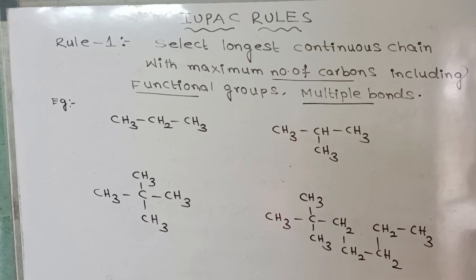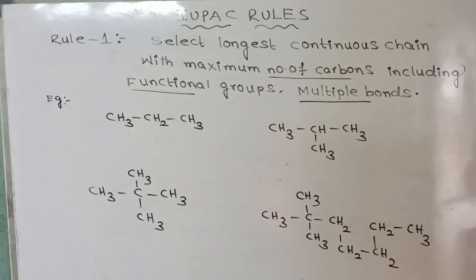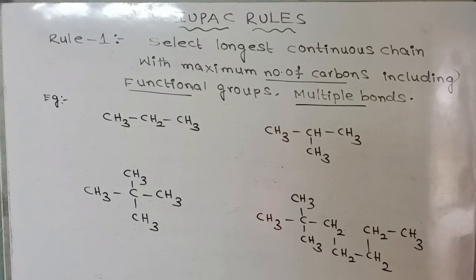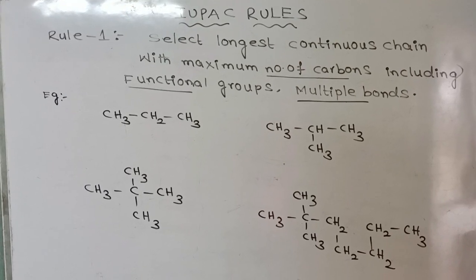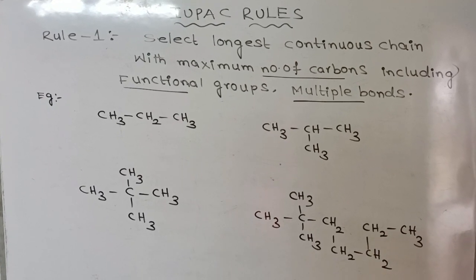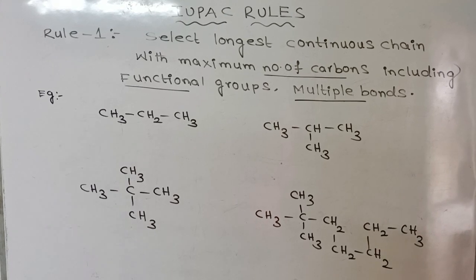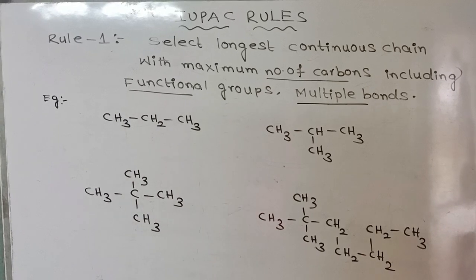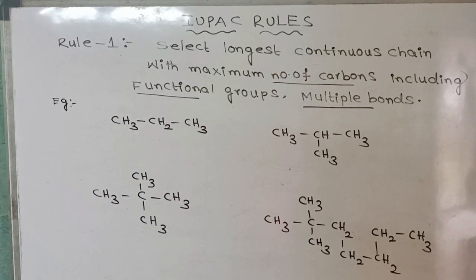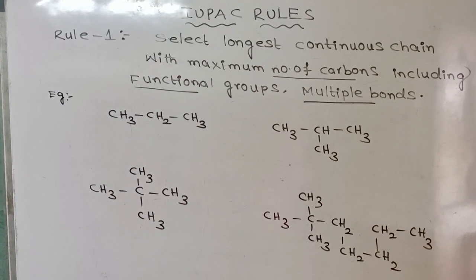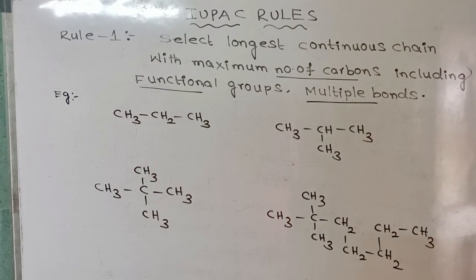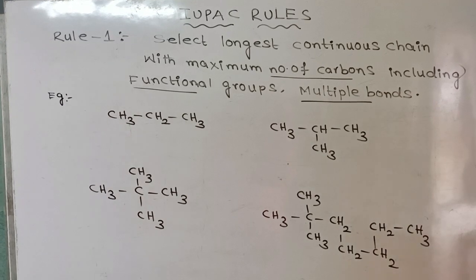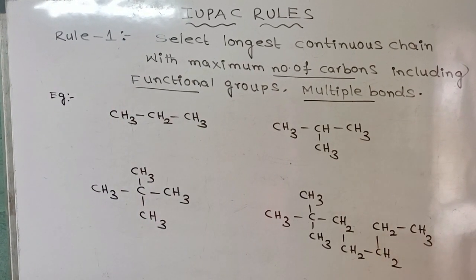In Rule 1, select the longest continuous chain with the maximum number of carbons — the chain including functional groups and multiple bonds. It is the first rule when you are observing the molecule to give the proper name. You should select the chain with the maximum number of carbons. While you are selecting the chain, it may be zigzag or straight chain, but it should be continuous. You should not give any gap while you are selecting the parent number of carbons.